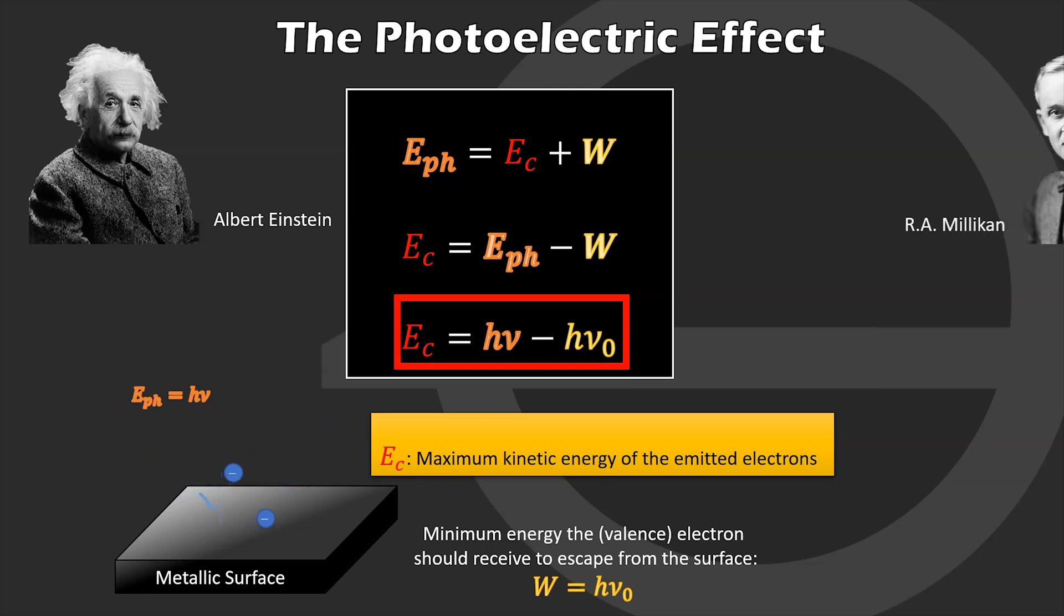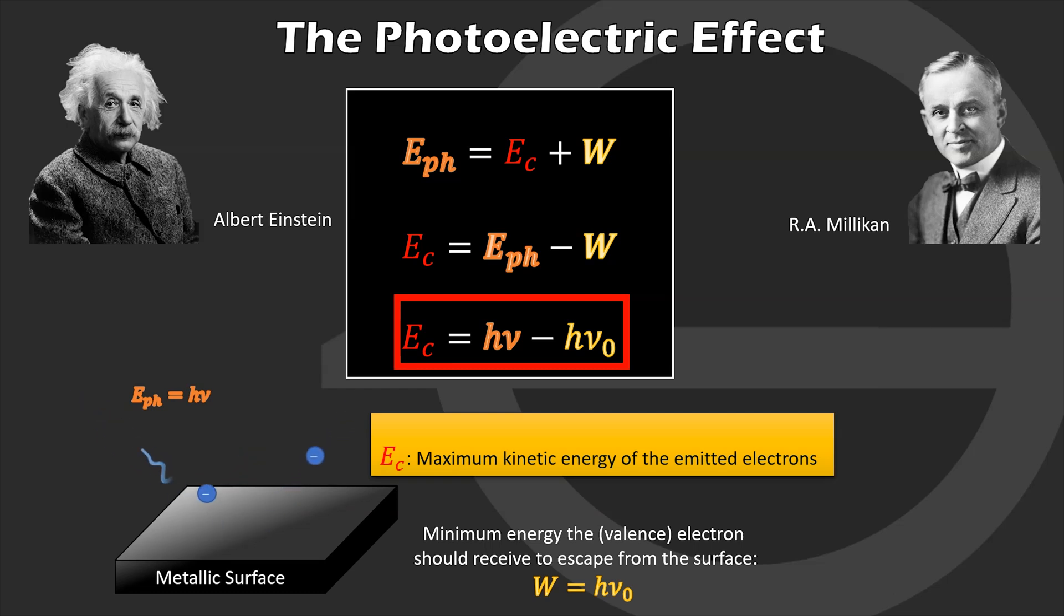Later in 1916, Robert Andrews Millikan verified experimentally this linear relation between the kinetic energy of the emitted electrons and the frequency of the incident light, and that proved Einstein to be correct with his theory. After that, they were both awarded the Nobel Prize in Physics for their work on photoelectric effect.